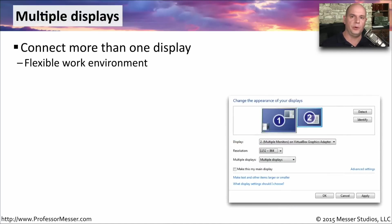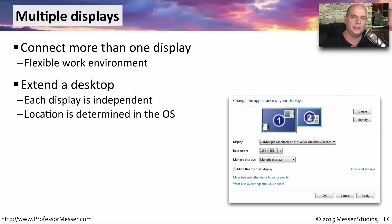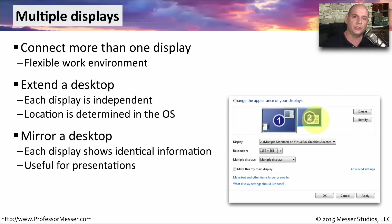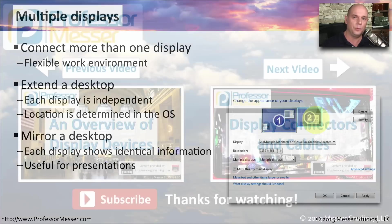Having multiple displays on your computer can really improve the efficiency of your work environment, allowing you to have different things on different displays and use them simultaneously. There are two different settings in your operating system. One is to extend the desktop between the two displays, where you move your mouse left and right between them — you determine which display is on the left and which is on the right in the OS configuration. You might also configure your second screen to be mirrored, showing exactly the same thing as the primary screen, which is especially useful for presentations when you want to confirm you're viewing exactly what the audience sees.